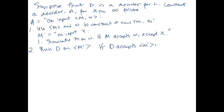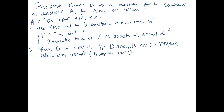If M fails to accept W, we want to reject. So our decider A for ATM should reject if M did not accept W. Otherwise we accept — and the otherwise here, since D is a decider, means D rejected M′. That's the complete description of our decider A.